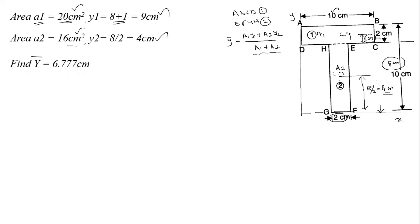Now find Y-bar using the formula: substitute the values of A1, Y1, A2, and Y2. We get Y-bar = 6.777 cm.